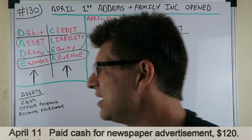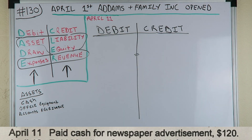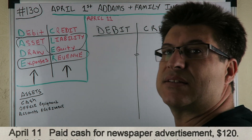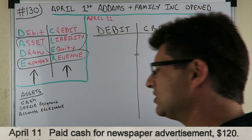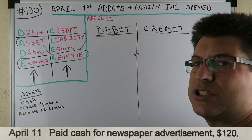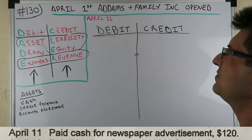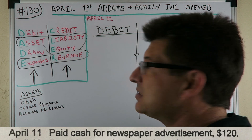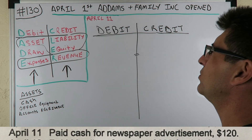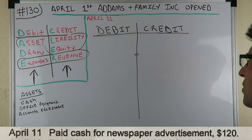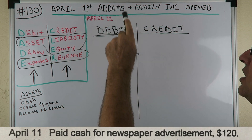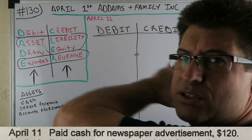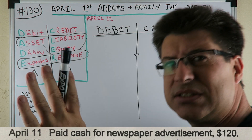Let's get into it. Here are common assets: cash, office equipment, accounts receivable. These are journal entries we've done already. This little journal entry is made easy. We're doing the Adams Family on April 1st — they opened a business. Now it's April 11th, we're doing another journal entry. In every single journal entry, you've got debits equaling credits — that's always going to be the case.